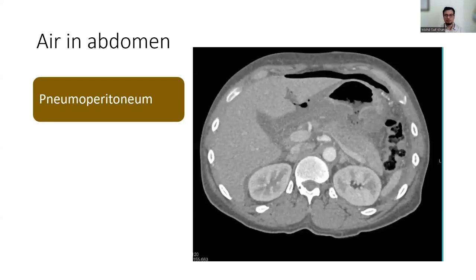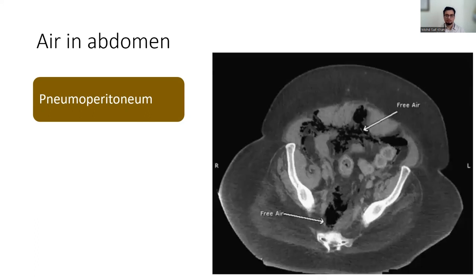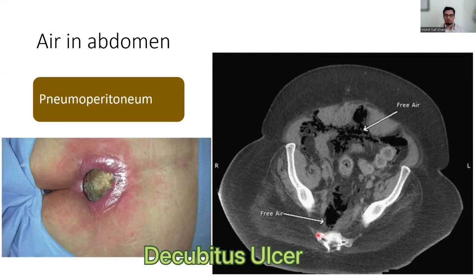This CT scan without contrast reveals a pocket of extra-luminal air anterior to the liver beneath the right hemi-diaphragm and scattered on the left side, consistent with free air — that is your pneumoperitoneum. Another axial CT shows free air in the pelvic cavity almost everywhere, and large air pockets near the sternum, which in this case was clinically correlated with a decubitus ulcer leading to necrotizing fasciitis.